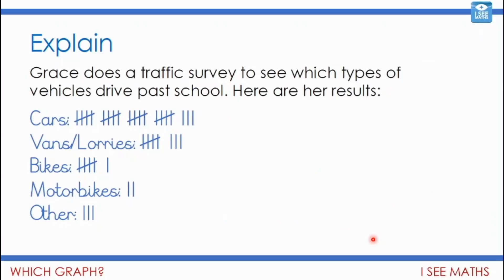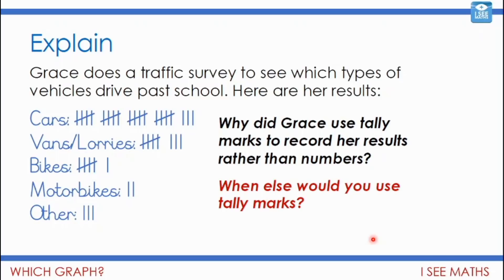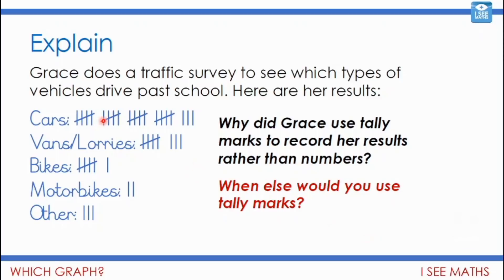Here's another example of how data is collected. Grace does a traffic survey to see which types of vehicles drive past school. Why did Grace use tally marks to record the results rather than numbers? If Grace used numbers, she'd be writing 1, then 2, then 3 and so on — but she uses marks because she doesn't know the answer yet. It's data collected over time; each time there's another car, she puts another mark down, and at the end we know how many.